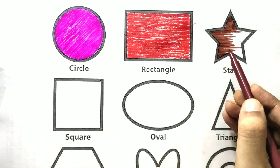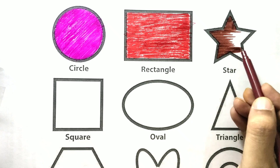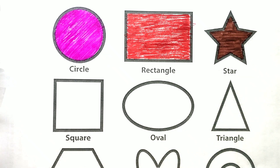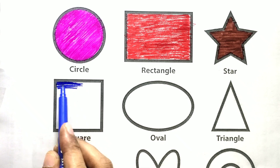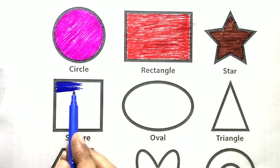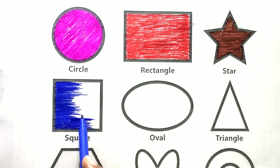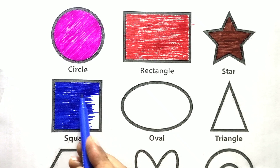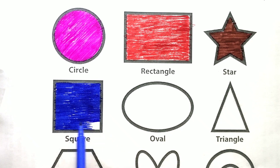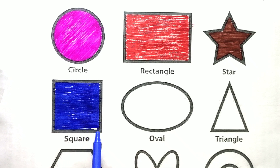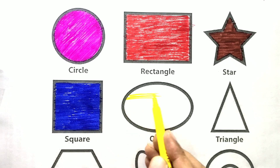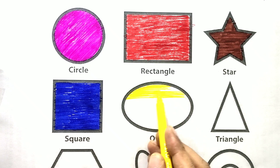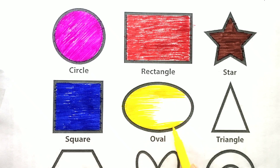Star with brown color. Square with blue color. Oval with yellow color.